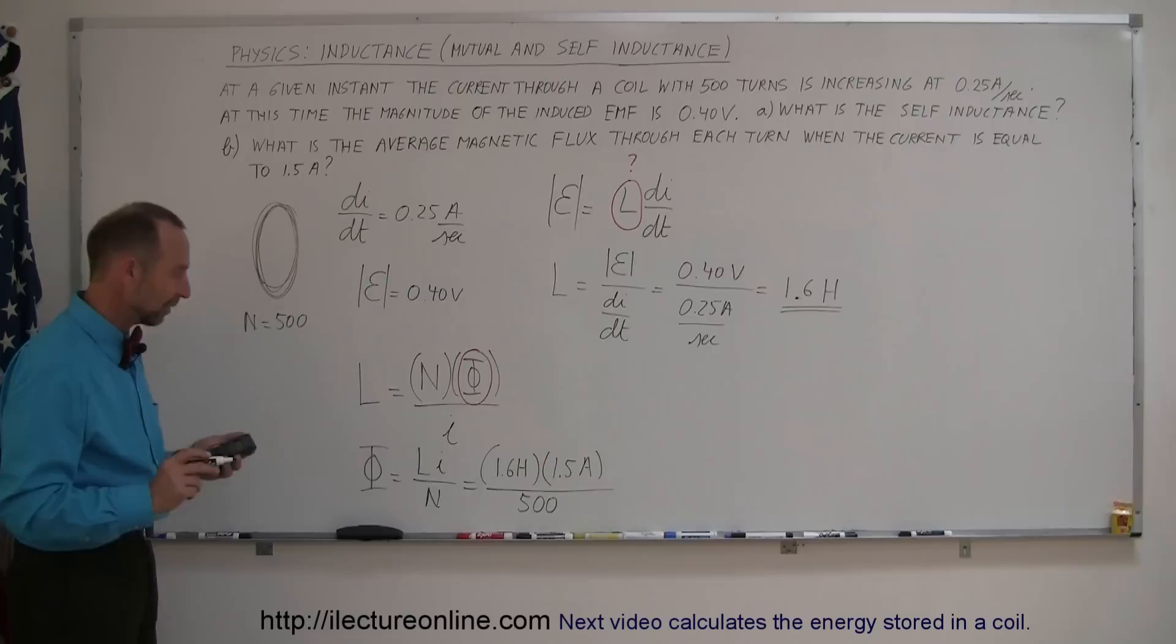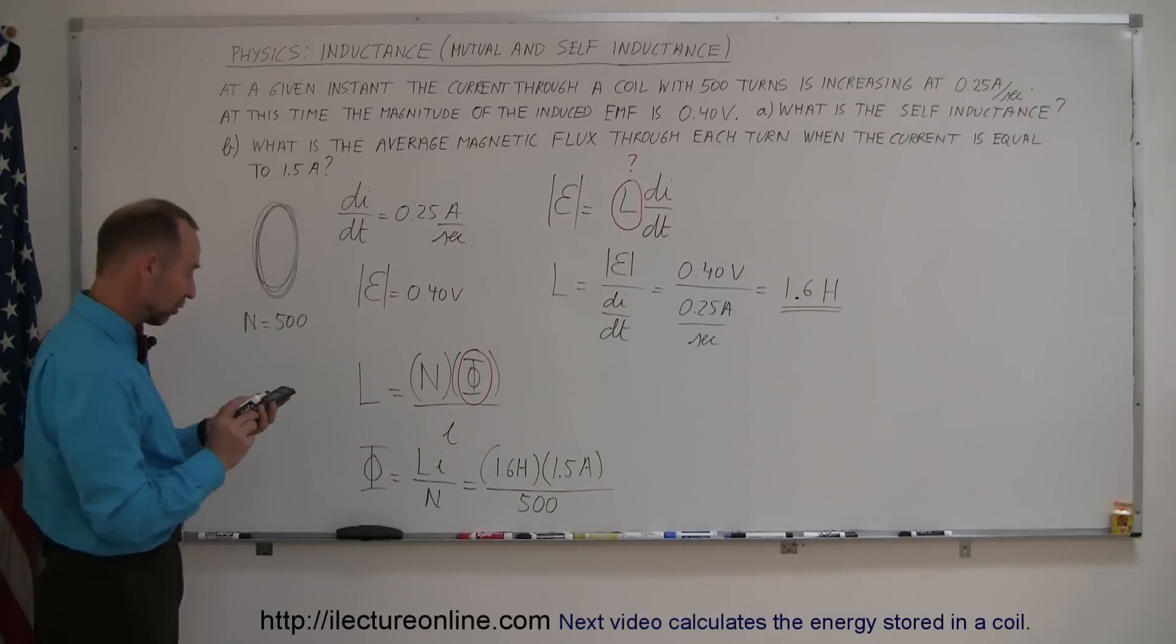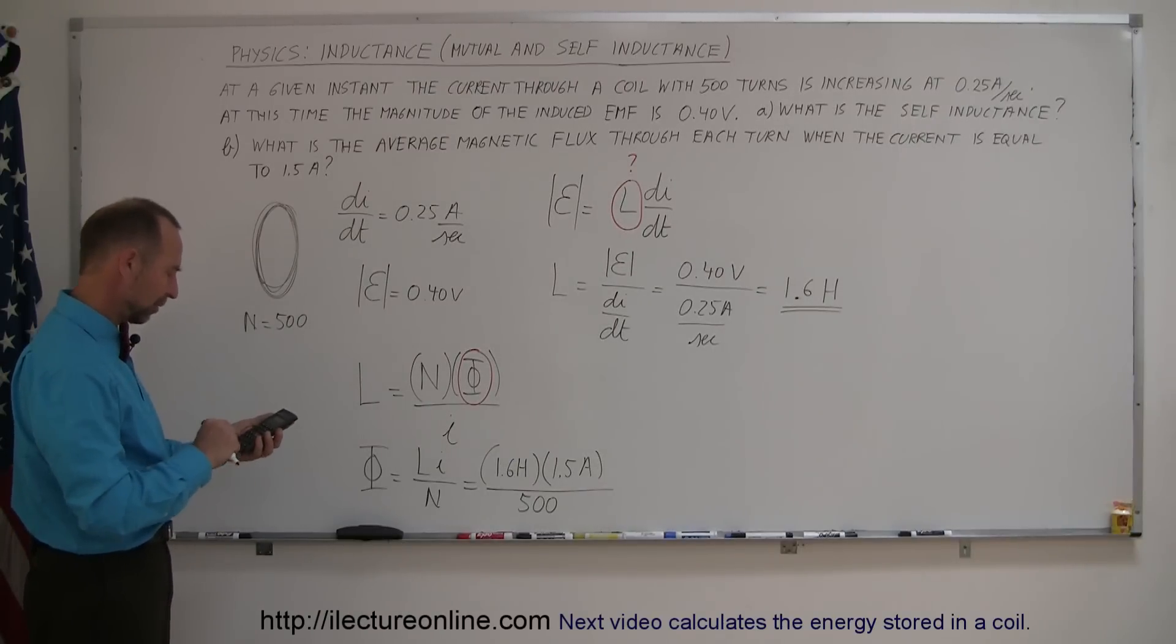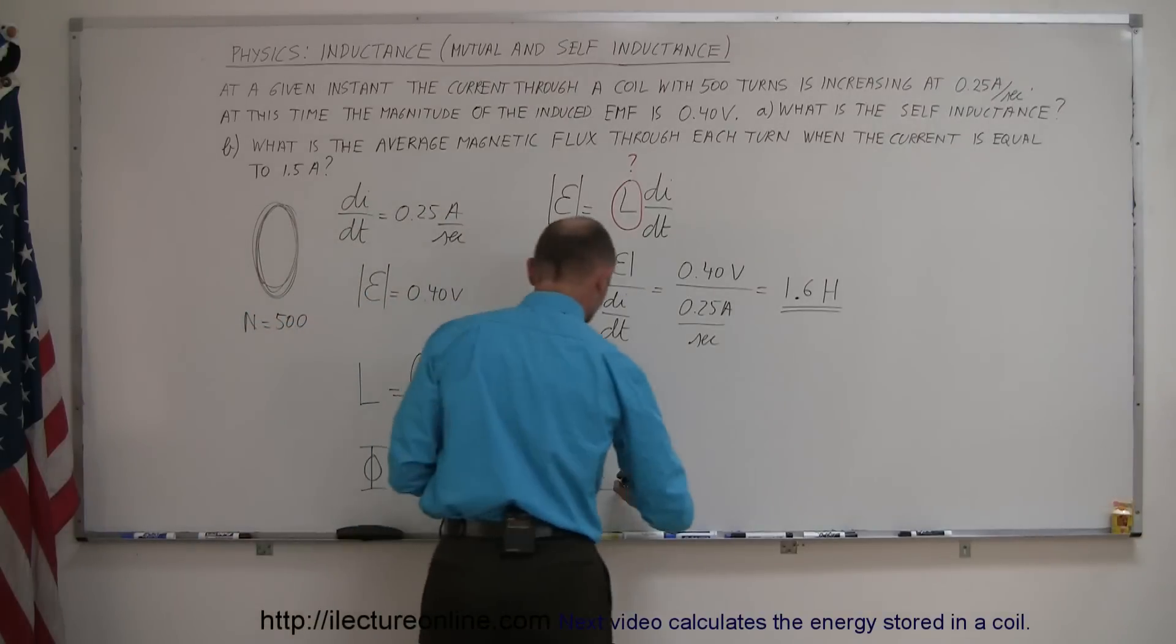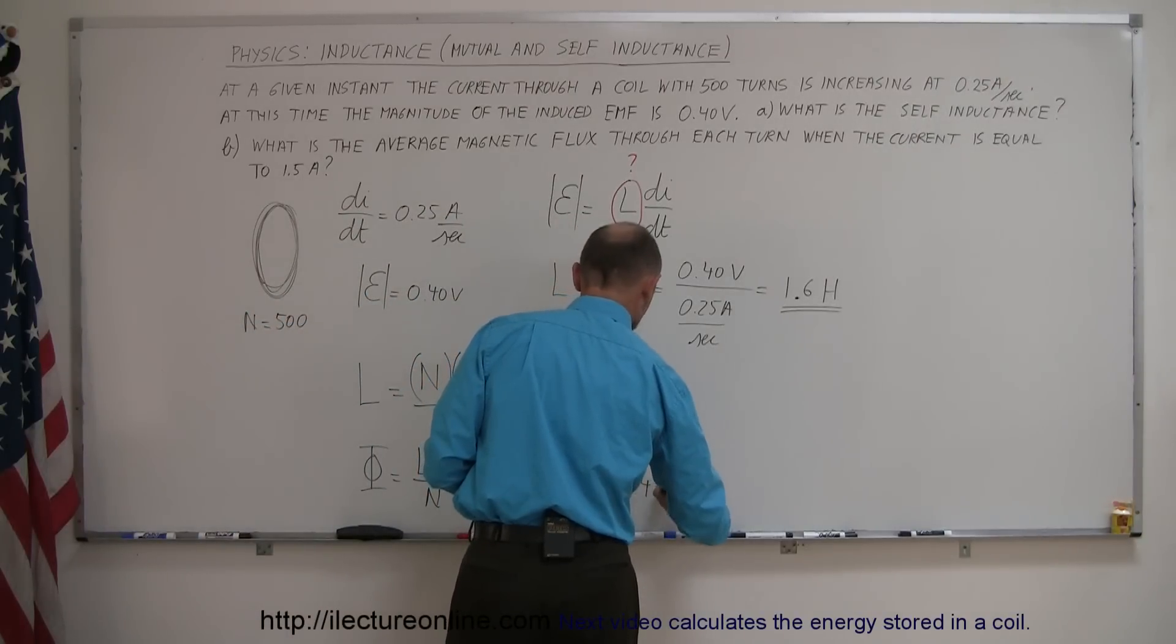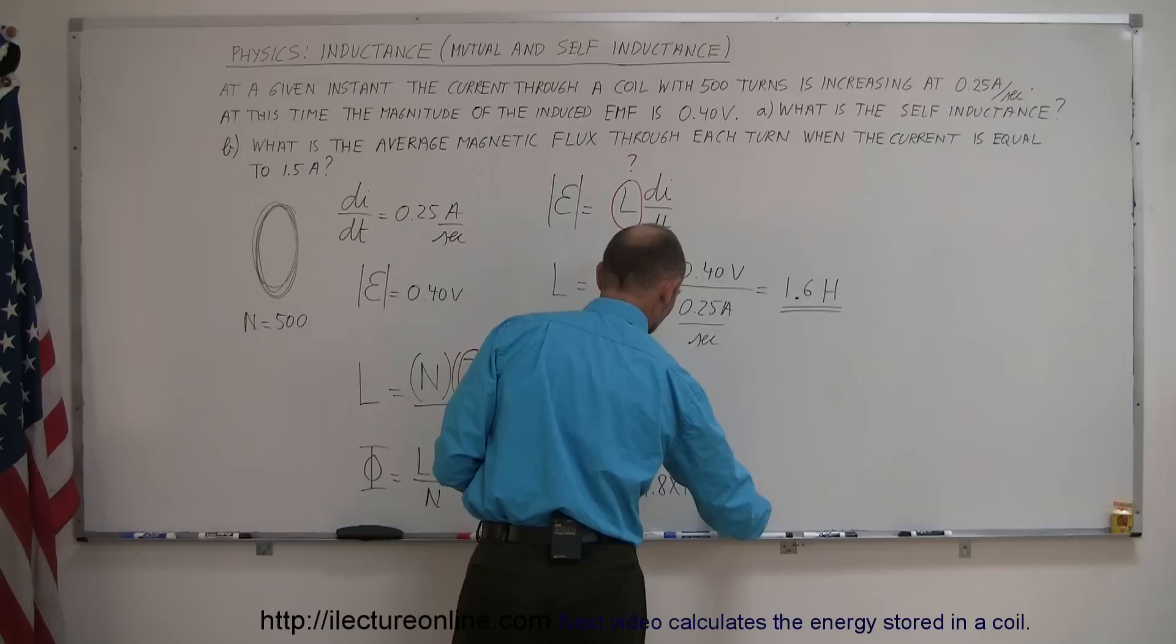And it turns out that Henrys times amps is Webers. That's the unit for the flux. So, 1.6 times 1.5, 2.4 divided by 500. And we get 4.8 times 10 to the minus 3 Webers.